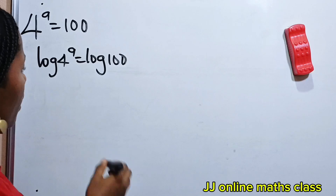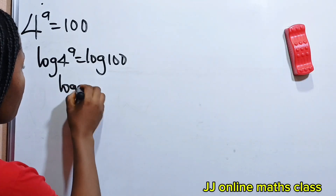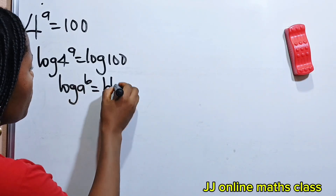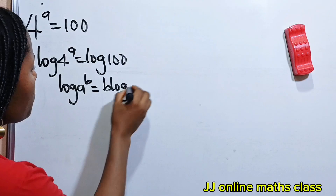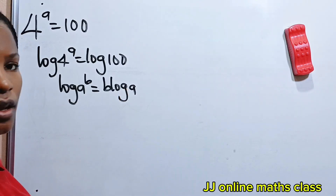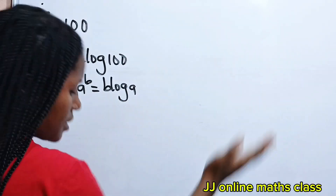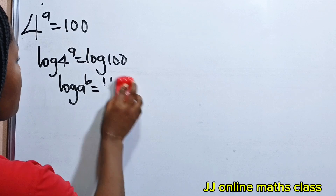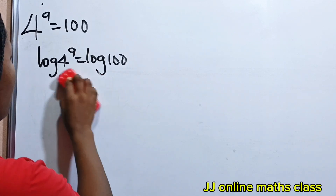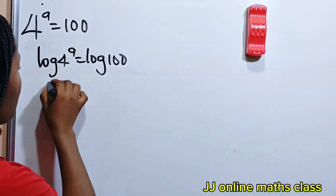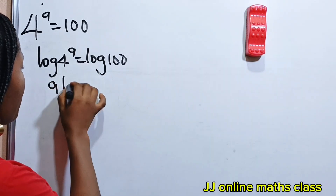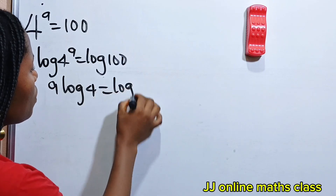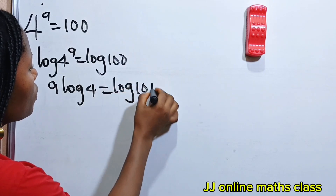Now remember that when you have log A raised to the power of B, this is equal to B multiplied by log A. So that means we can write this as A multiplied by log 4 is equal to log 100.